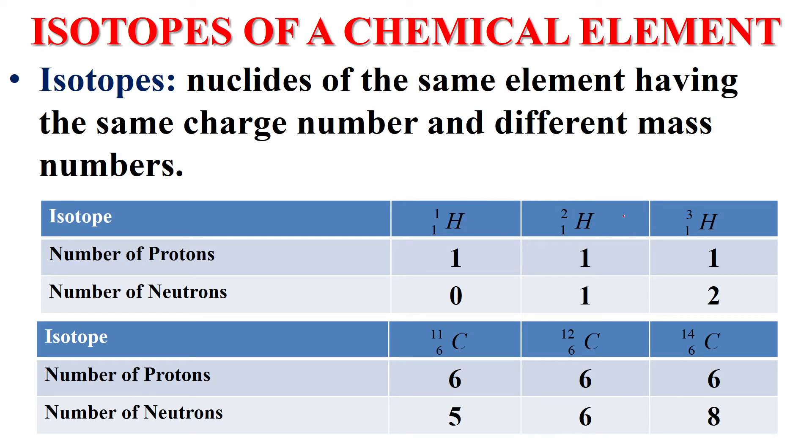First of all, these three are isotopes of hydrogen because all elements in them are H, hydrogen. Here, as you can see, these three isotopes have the same charge number. So Z equals to 1.